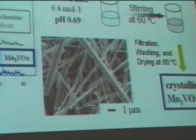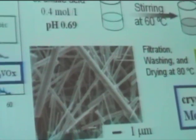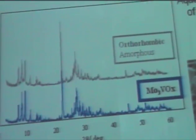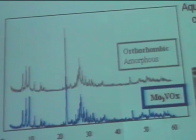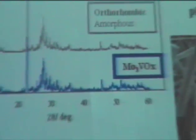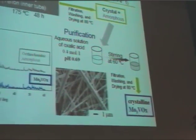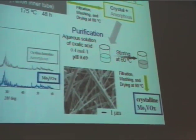Sometimes you will have some amount of impurity. You have to remove it by washing with oxalic acid for a while. And then you can get a very nice, well-crystallized solid. The solid diffraction shows it matches the expected phase.